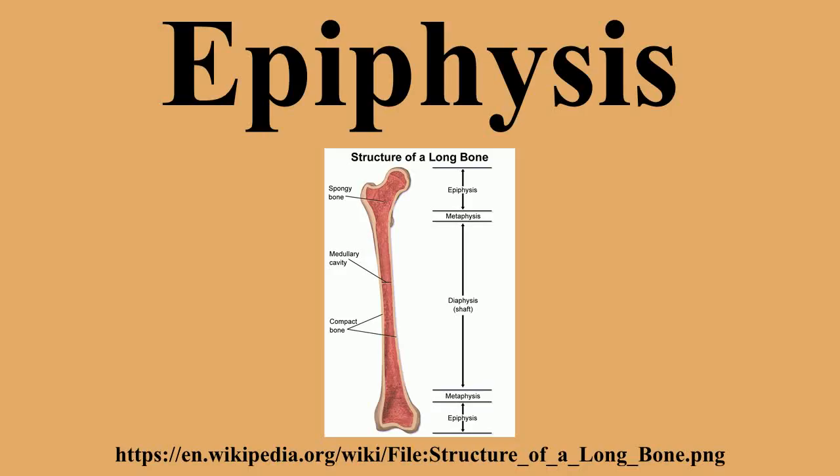The epiphysis is filled with red bone marrow, which produces erythrocytes. There are four types of epiphysis. The pressure epiphysis is the region of the long bone that forms the joint. Pressure epiphyses assist in transmitting the weight of the human body and are regions of the bone that are under pressure during movement or locomotion.